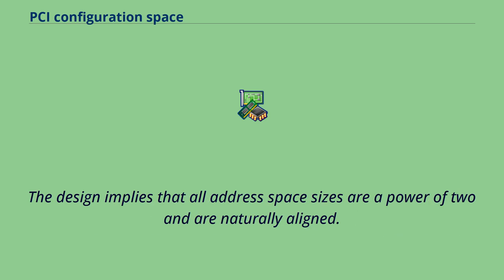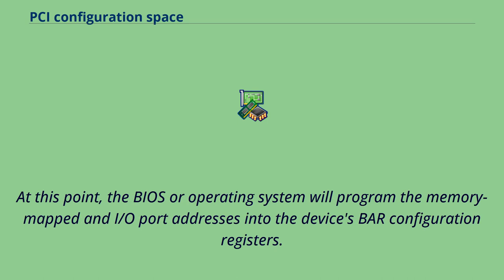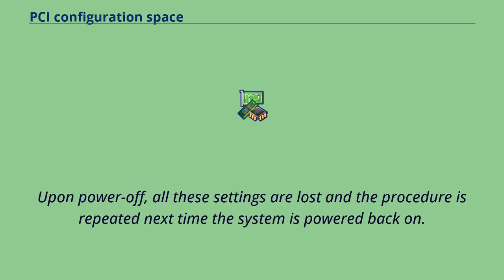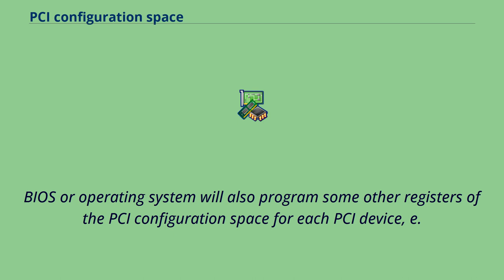The design implies that all address space sizes are a power of two and are naturally aligned. At this point, the BIOS or OS will program the memory-mapped and I/O port addresses into the device's BAR configuration registers. These addresses stay valid as long as the system remains turned on. Upon power off, all these settings are lost and the procedure is repeated next time the system is powered back on. The BIOS or OS will also program some other registers of the PCI configuration space for each PCI device, e.g., interrupt request.